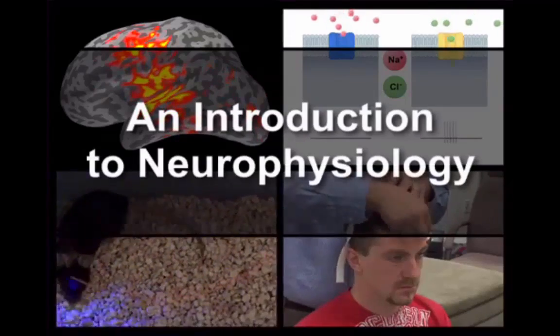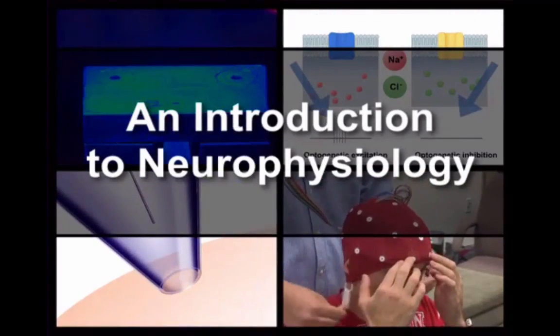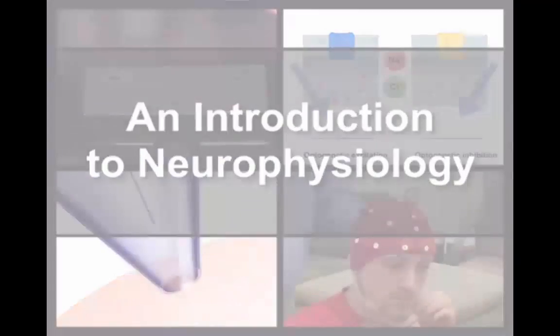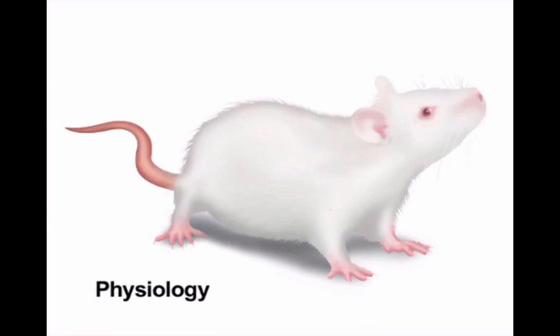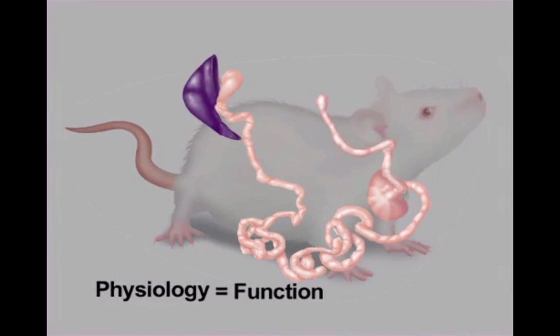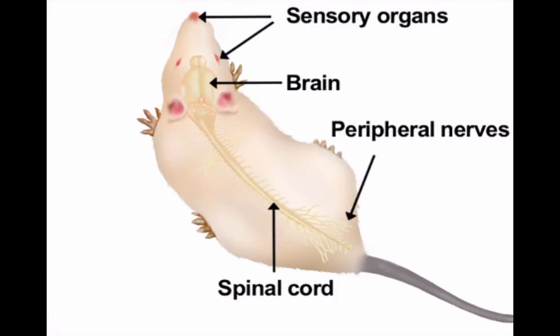The field of neurophysiology provides insight into how the nervous system works and how its dysfunction can lead to disease. Physiology is the study of how organisms and their parts function. Neurophysiology can be defined as the study of the functioning of the nervous system, which includes the brain, the spinal cord, peripheral nerves, and sensory organs.